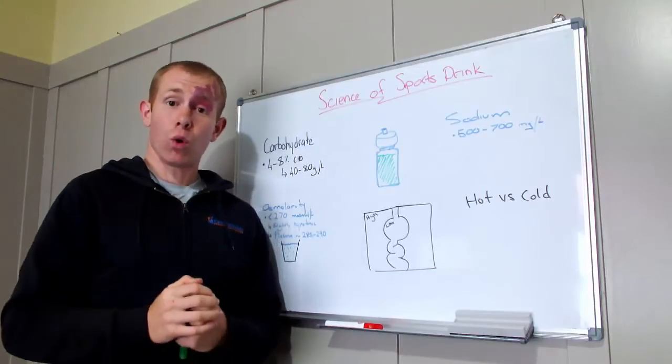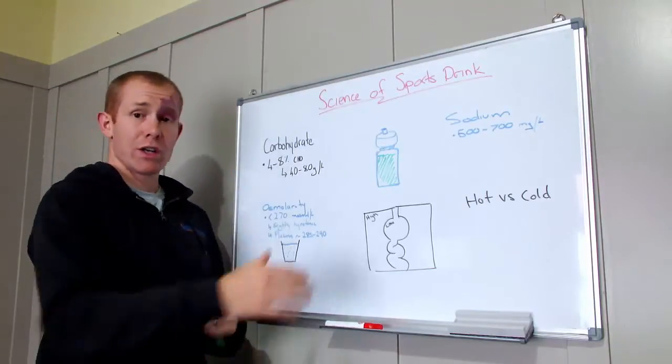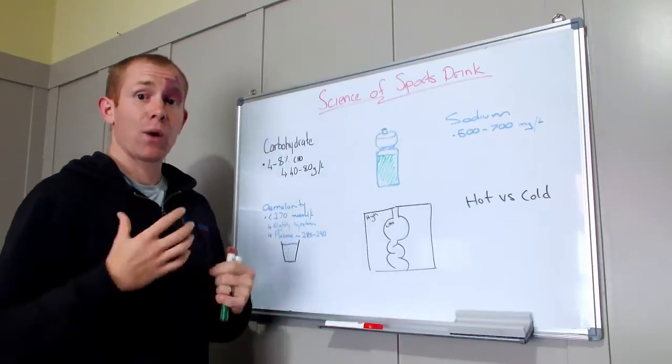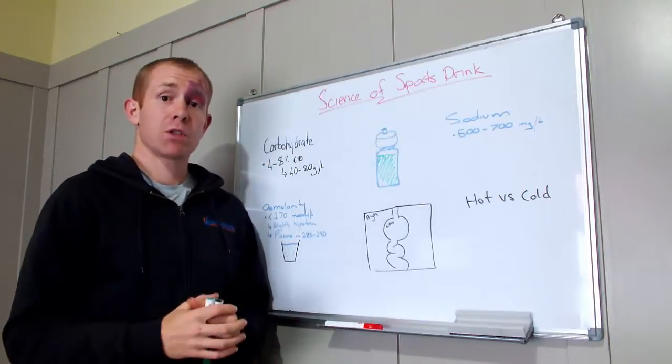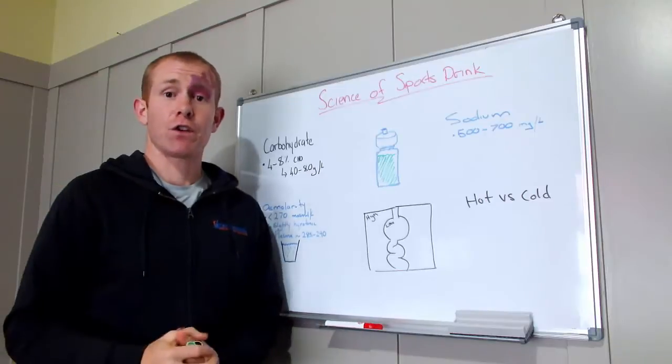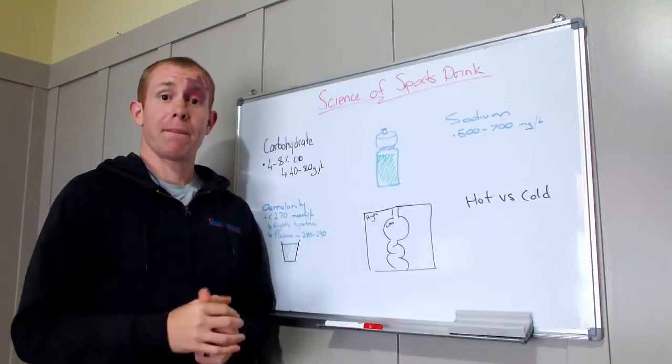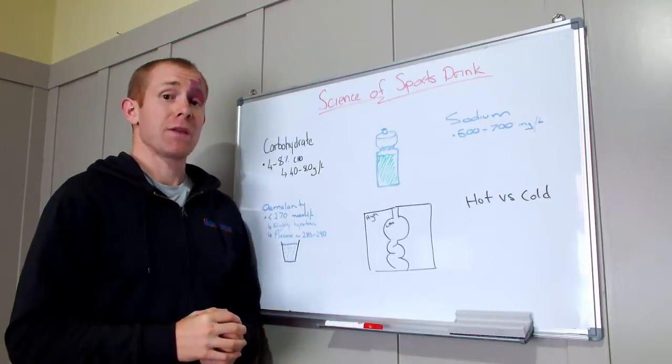Now when you break it down, all a sports drink is, is carbohydrate or sugar, sodium, salt, and water. Those things put together, usually they chuck in a few added extras as well to pump it up, but that's pretty much the basics of it.